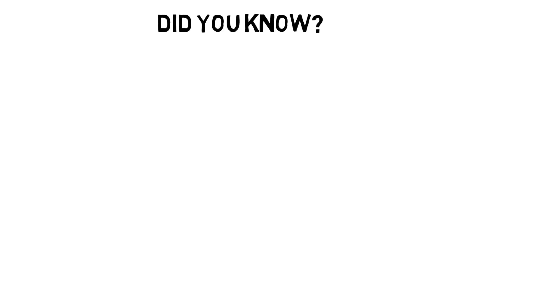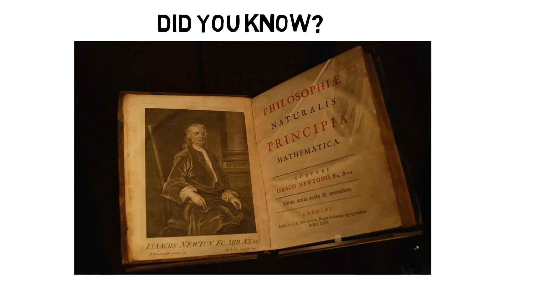Did you know? The Principia book in which Newton's laws of motion were published is considered one of the most important works in the history of science. Principia is a work in three books by Isaac Newton first published on 5th July 1687.